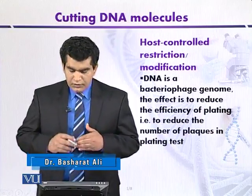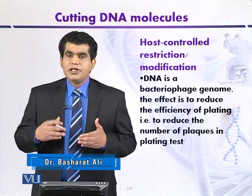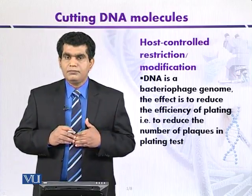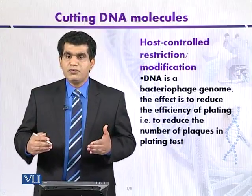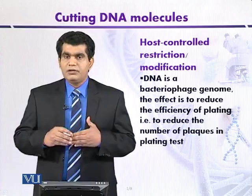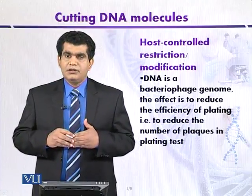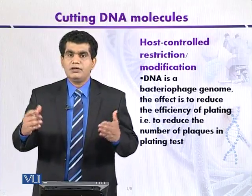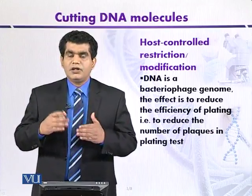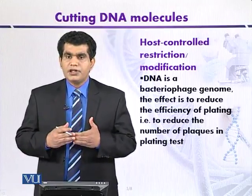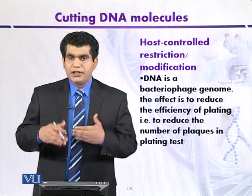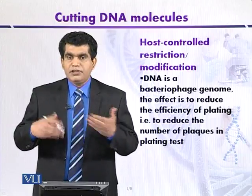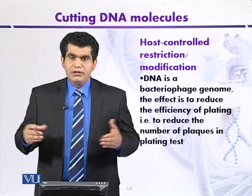Bacterial cells are colonized or attacked by different types of bacteriophages. As you know from the lytic cycle, bacteriophages can attack the bacterial cell, inject their DNA, and take control of the host machinery. They can replicate and cause cell lysis. However, this does not always occur because the cell also contains restriction enzymes that can protect it from lysis. Some bacteriophages are still able to replicate within the host bacterial cell, as indicated by the lytic cycle.